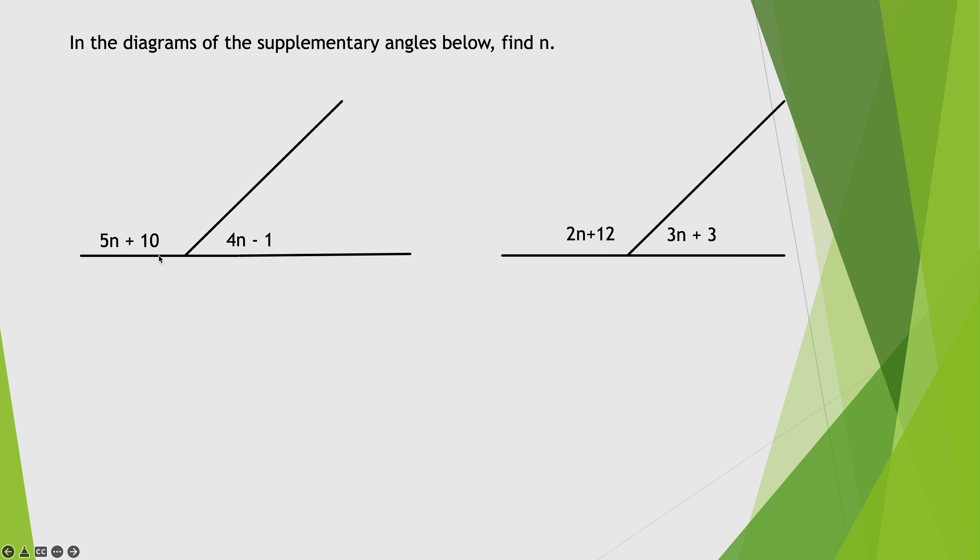All right, these are supplementary angles, which means together they add up to 180 degrees. They make a half a circle. So 5N plus 10 plus 4N minus 1 is 180. Doing a little same side, same operation here, combining like terms. I get 9N plus 9 is 180, minus 9 from both sides, and I get 9N is 171, dividing by 9, N is 19.